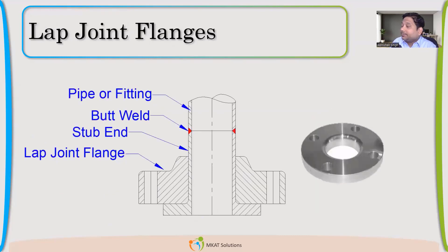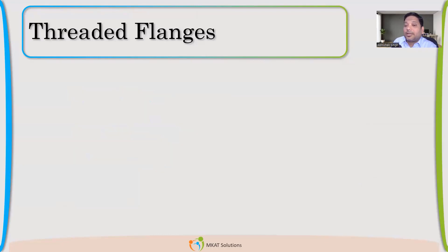Lap type flanges are very frequently used where we struggle with orientation. If there is low pressure and we can manage with slip-on, lap joints are fixed in such a way that you can always rotate the flange to match with the pressure vessel, because otherwise it becomes really difficult to match. Where you're facing this problem, you can go with lap joint flanges.